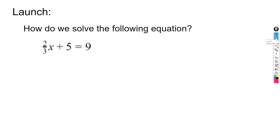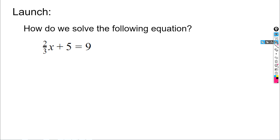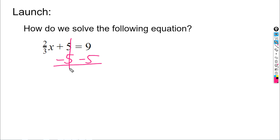We're going to start off with an equation that actually has no exponents but it does have something that's rational — it has this fraction out front: two-thirds x. Our goal is to solve this equation and get our variable x all alone. There are two terms on the left side; the second one doesn't have an x, so let's get rid of that positive five by subtracting five from both sides. Now we have two-thirds x equals four.